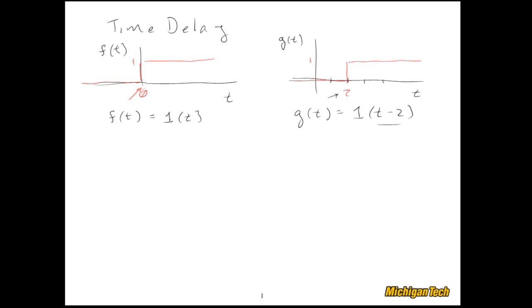Now if we take the Laplace transform of f(t), we could do it formally or look it up in a Laplace transform table, but we get 1/s. If we take the Laplace transform of g(t), we would get (1/s)e^(-2s).